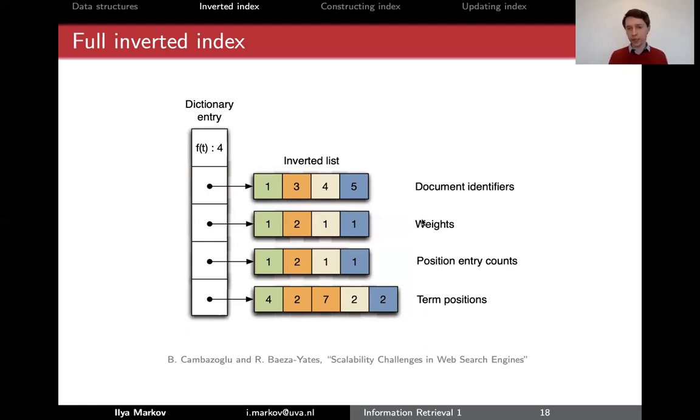We will talk about ranking and when we talk about ranking this notion of weights will be clear. For example BM25 can be a weight or TF-IDF can be a weight so that's something that you can define yourself. The document IDs, term frequencies and positions we've seen on previous slides.